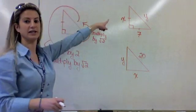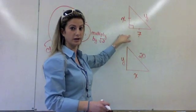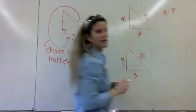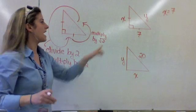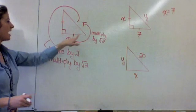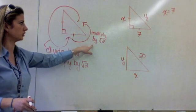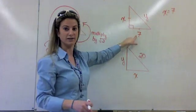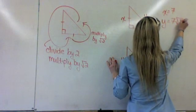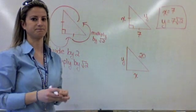Let's try a couple of examples — find x and y. In this case, x is very easy to find because one leg is 7, so the other leg must also be 7. Now we want to find the hypotenuse. We have a leg and we want to go to hypotenuse, so we multiply by root 2. So y is simply going to be 7 times root 2. Those are our answers for that one.